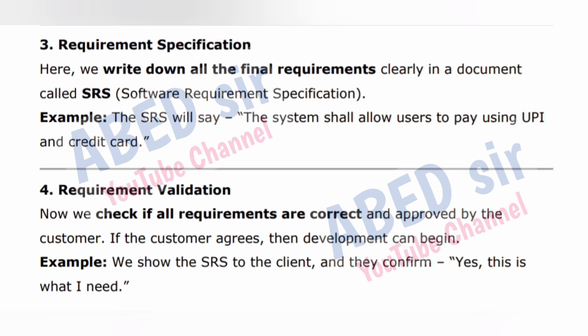Step three: Requirement Specification. Here we write down all the final requirements clearly in a document called SRS — Software Requirement Specification. Example: the SRS will say, 'The system shall allow users to pay using UPI and credit card.' Step four: Requirement Validation. Now we check if all requirements are correct and approved by the customer. If the customer agrees, then development can begin. Example: we show the SRS to the client and they confirm, 'Yes, this is what I need.'